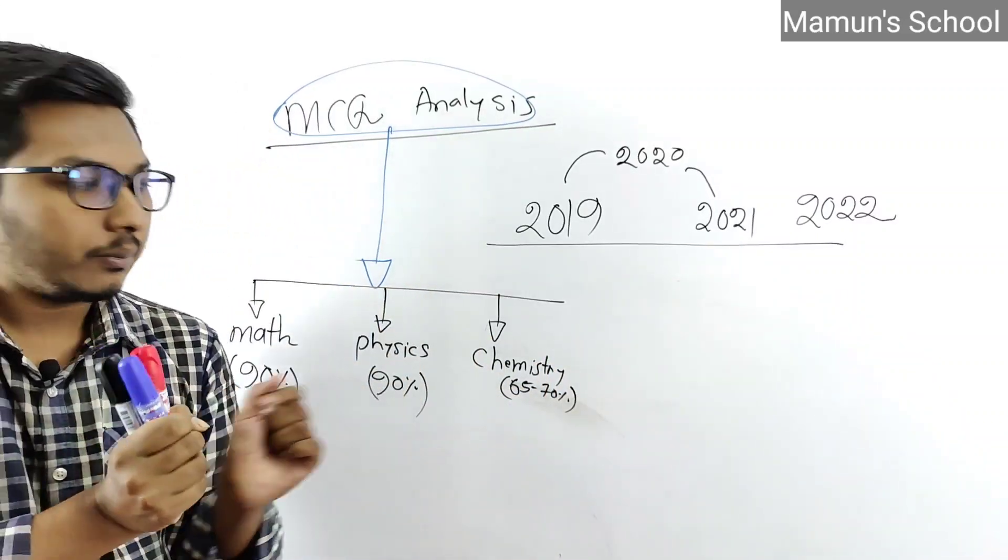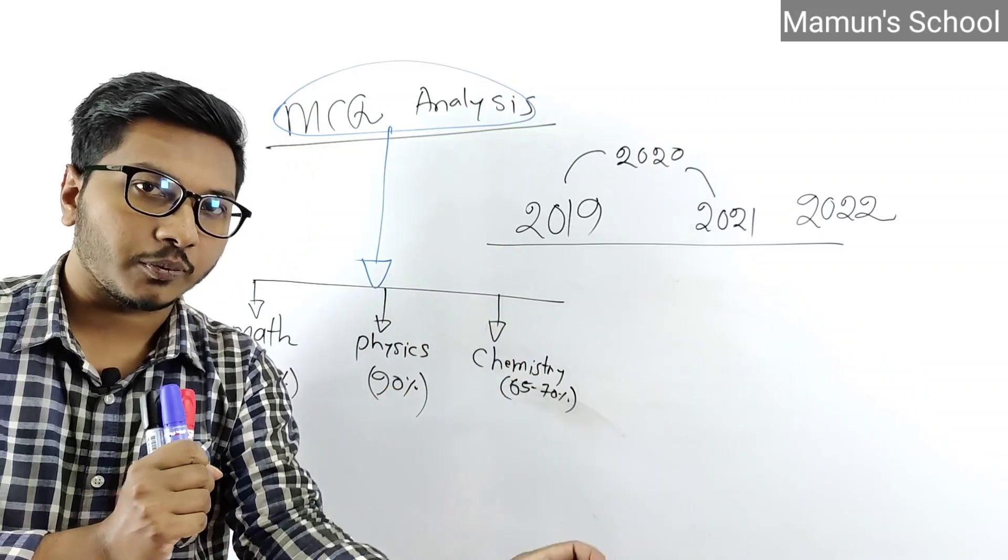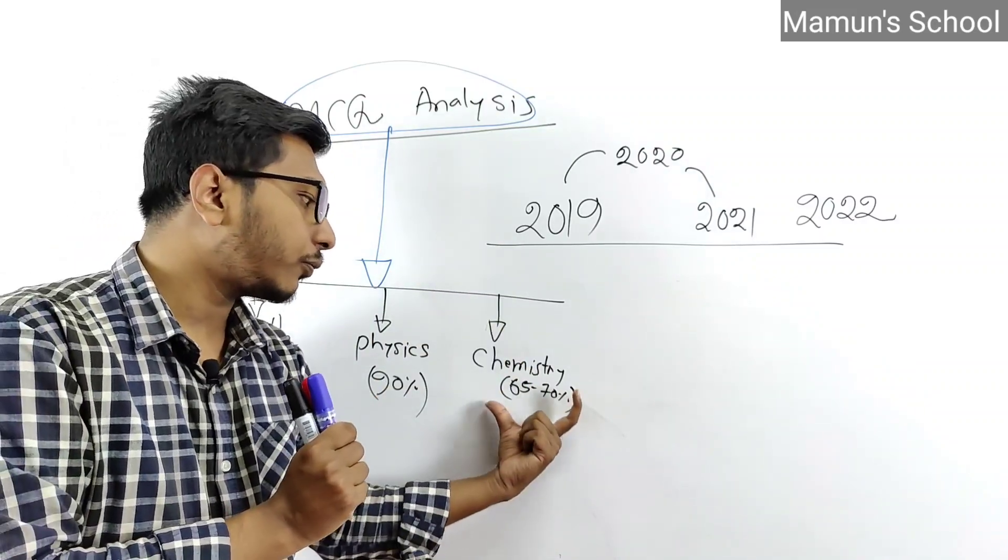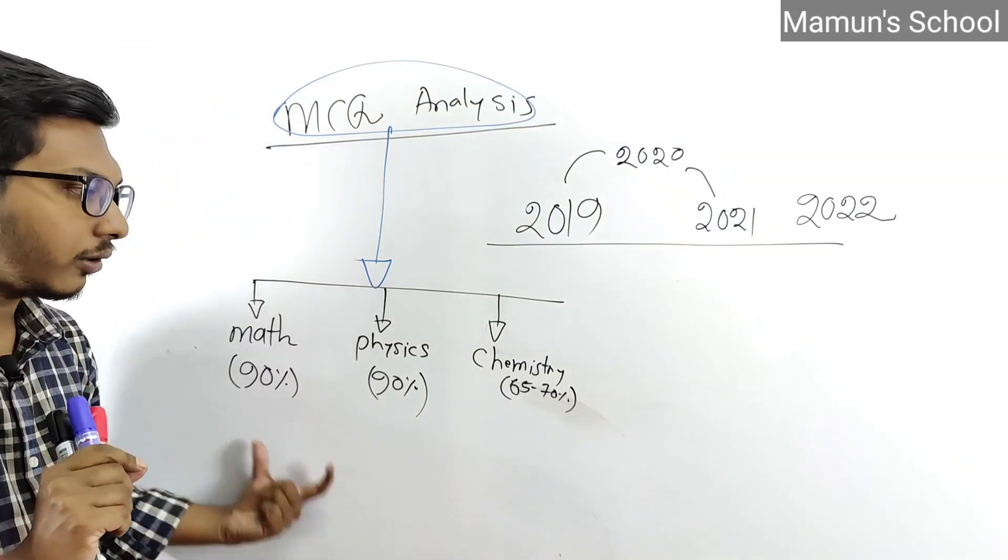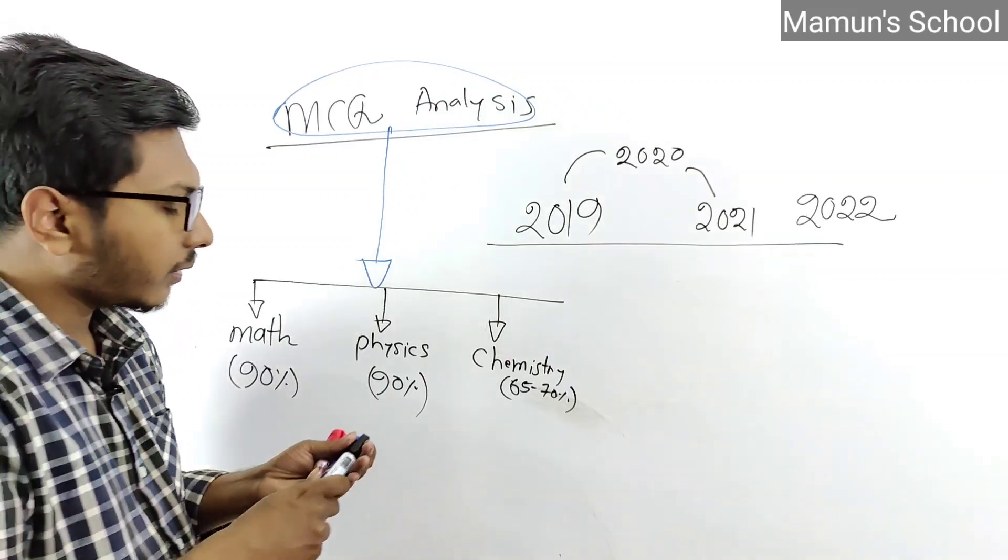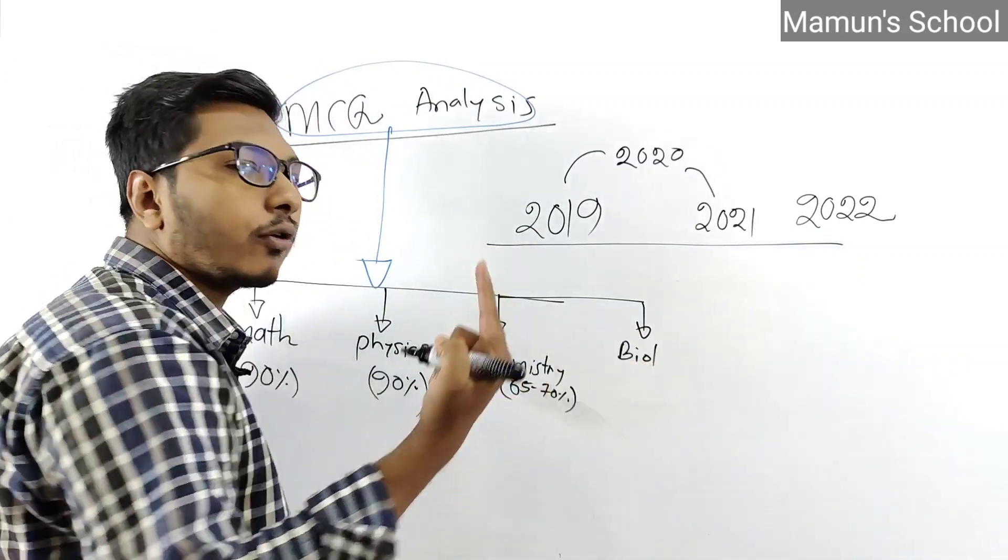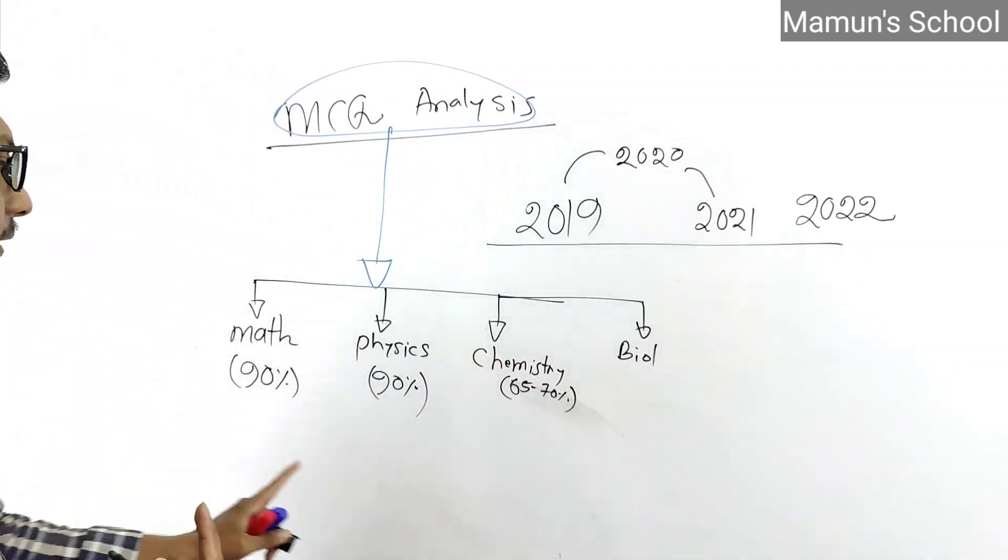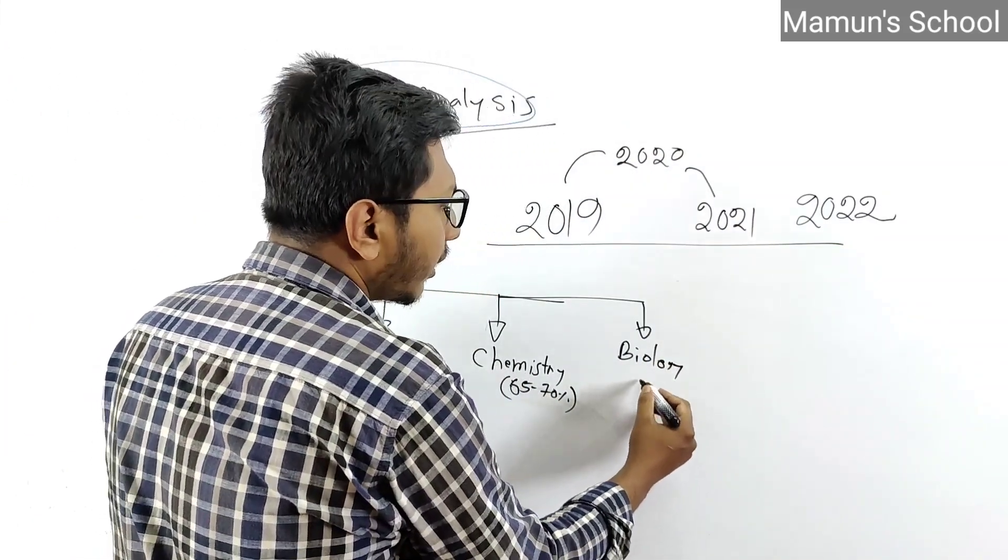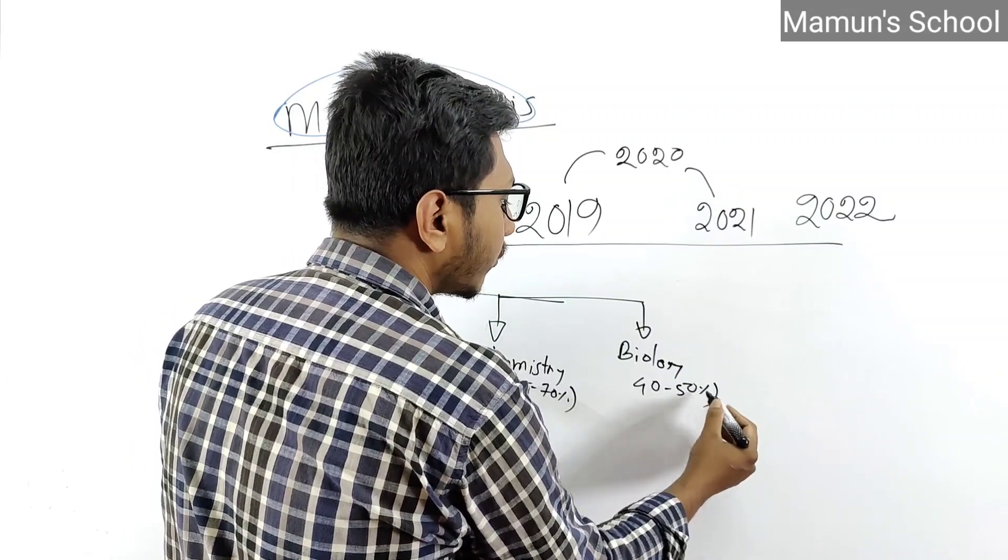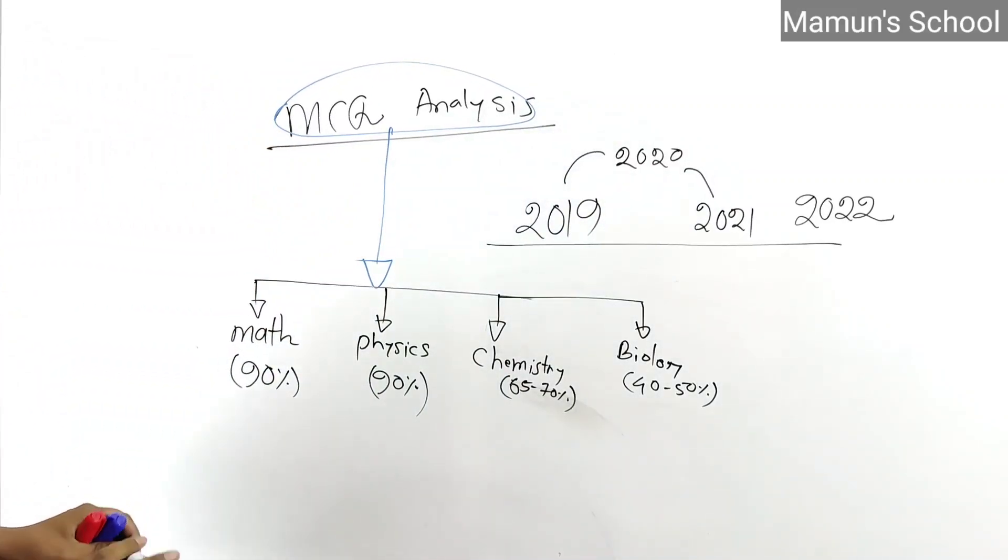I solve chemistry questions topic by topic showing which topics appear more frequently. For physical chemistry, I show what percentage comes from which topics. Biology topics also get similar treatment. By analyzing these percentages - 40%, 50% from major topics - you can understand where to focus your preparation.